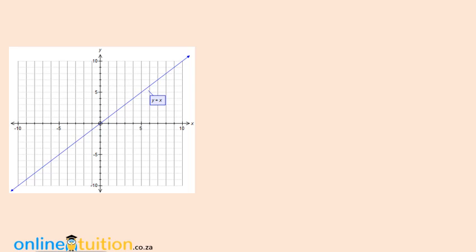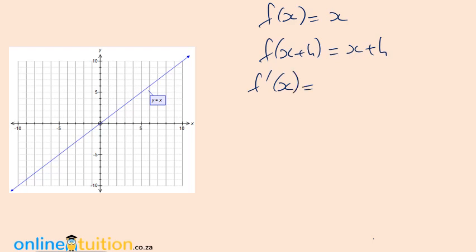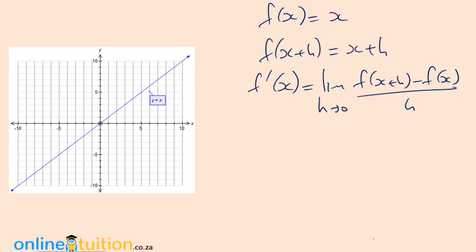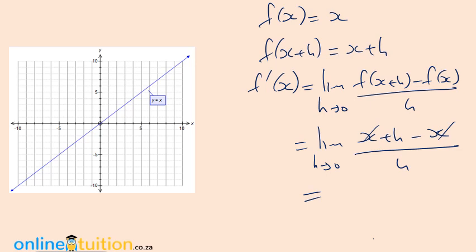Let's take another simple function: f(x) = x — just a straight line passing through the origin. We're given f(x) = x, so f(x+h) — wherever there's an x, replace it with x+h. Write down the definition of the derivative again. By the end of matric you'll write this so many times. f(x+h) is x+h, f(x) is x, all over h. As h tends to zero, the x's cancel.